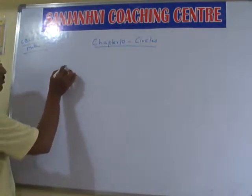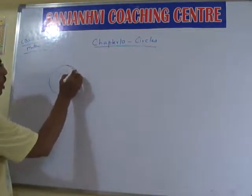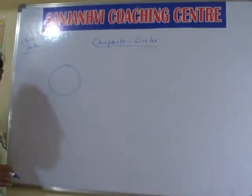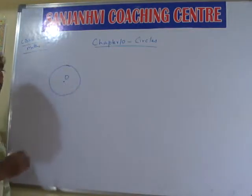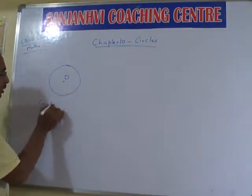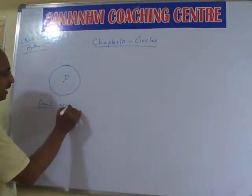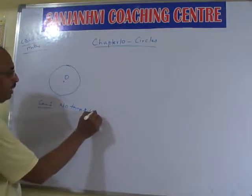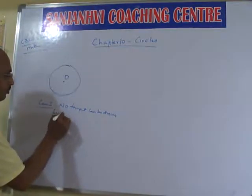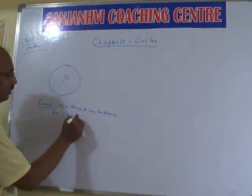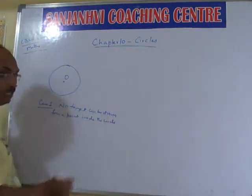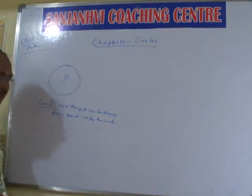See, if a circle is there, from inside can we draw a tangent? No. So you can say that no tangent can be drawn from a point inside the circle.